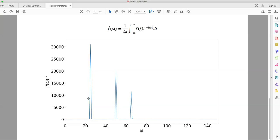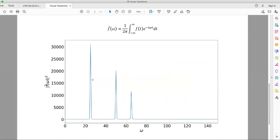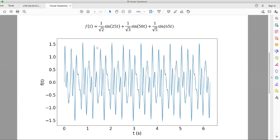The relative heights are associated with the coefficients attached to each function. So at 65 hertz you have the smallest peak because that function had the smallest coefficient, namely one over square root of five. And the peak at 25 hertz is the largest one because its coefficient was the largest among the three.